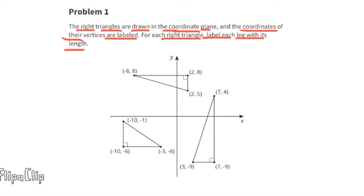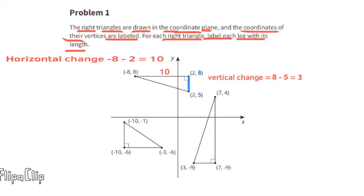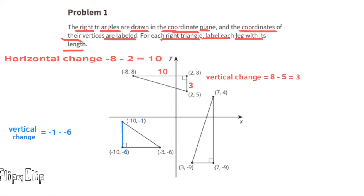The points on this line have a horizontal change that equals 10, so its length is 10 units. The points on this side have a vertical change that equals 3, so its length is 3 units. The points on this side have a vertical change that equals 5, so this side length is 5 units.